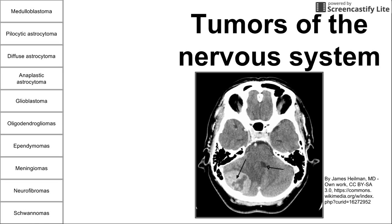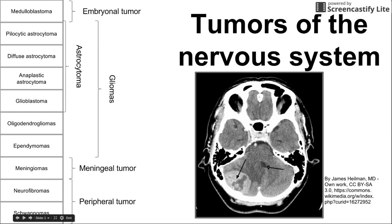This is a brief video on tumors of the nervous system. We're going to be talking about several tumors that are found in the nervous system. They're listed across the left here. It's most helpful if you can organize these in your head to help remember them, and these are some categories to help you organize them.